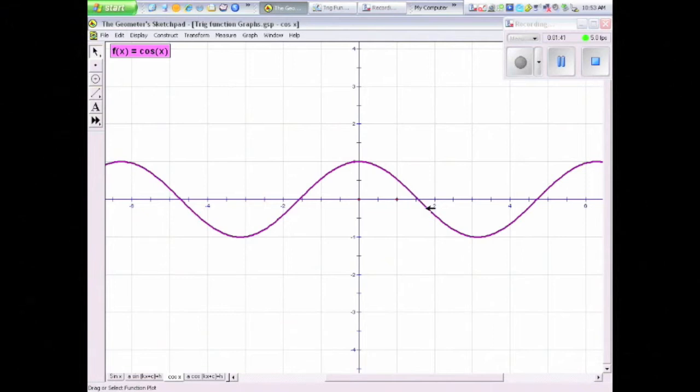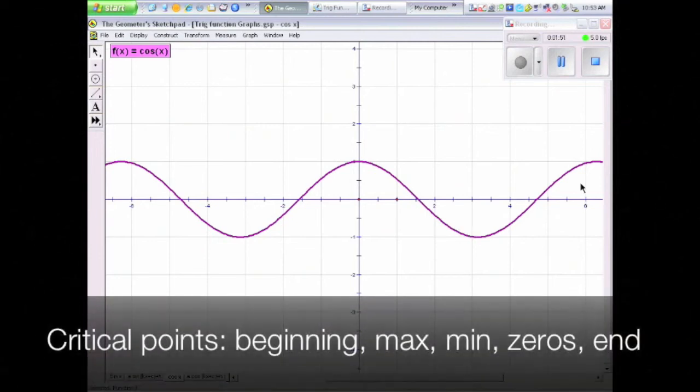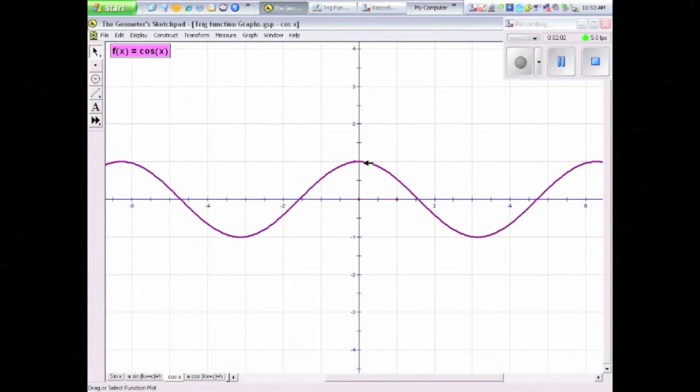If you're going to be able to graph this by hand, it is absolutely critical that you be able to graph those important or critical points. Especially when we get into something a little more complicated, when we begin to change the amplitude, change the phase shift, change the period, the vertical shift. If I can't graph sine and cosine of x, there's no way I'm going to be able to graph anything more complicated.